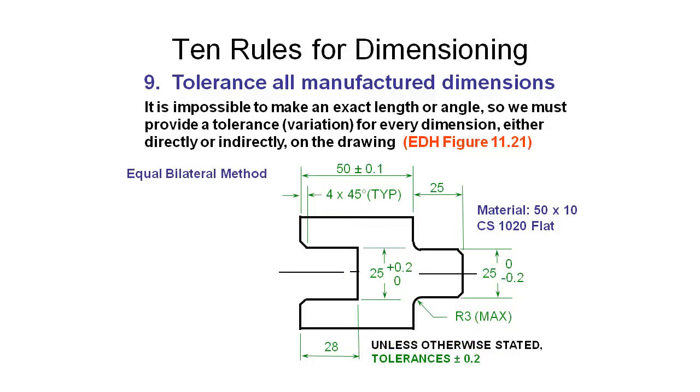There are a few different methods that we can use to specify our tolerances, so we're going to explain them now. One is the equal bilateral method, so this is an example here where we've got the dimension of 50, and we're saying that we're going to allow plus or minus 0.1 of a millimeter on this dimension, so it could go to 50.1, or it could go down as low as 49.9, and that's the range of allowability. That's one method that you can use.